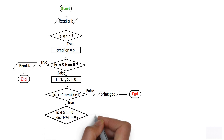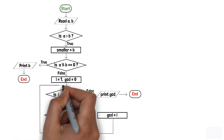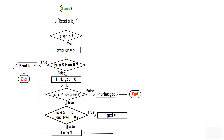If both conditions are true, we update variable gcd with i and increment i by one. If the condition is false, we simply increment i by one. A loop is created before the second-to-last decision box so that for each iteration, whenever i is less than or equal to smaller, it is checked whether i is a divisor of both a and b, and if so, gcd is updated with i.